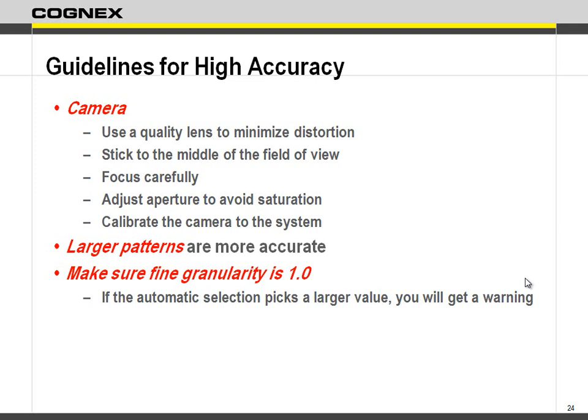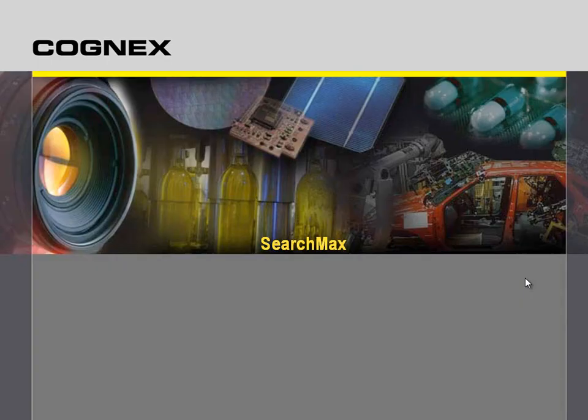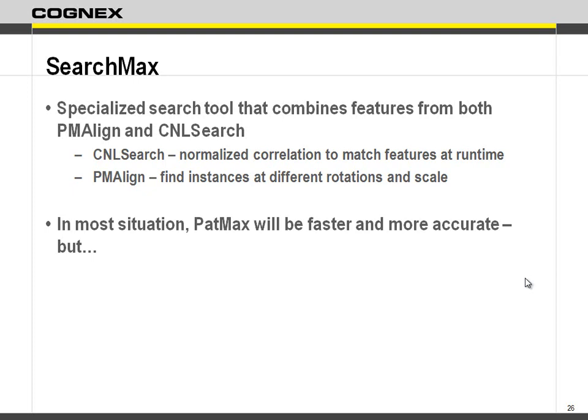Larger patterns are more accurate because larger patterns have more points, and more points means more accuracy. Make sure fine granularity is set to one - if it tries to set a larger value it will tell you, and it's usually due to having a blurred image - it will actually say the image is blurry. Now let's talk about SearchMax. What SearchMax does is it takes some features from PatMax and combines it with CogNel Search, which is a normalized correlation search.